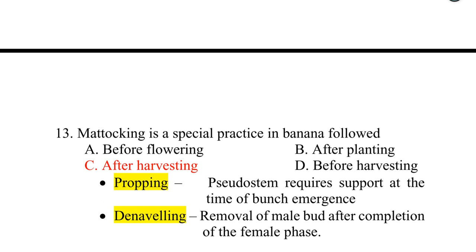Thirteenth one. Mataking is a special practice in banana followed after harvesting. Propping is the practice where the pseudostem requires support at the time of bunch emergence. Denavelling is the removal of the male bud after the completion of female phase.